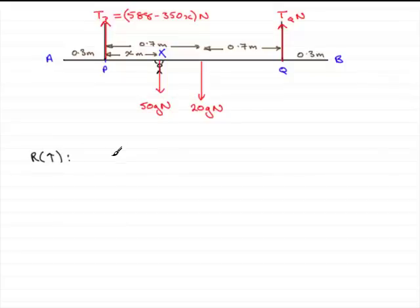...the resultant force upwards is going to be tp plus tq. Well, tp is 588 minus 350x, and then we've got plus tq, and then we've got forces acting downwards. We've got the minus 50g and we've got the minus 20g.